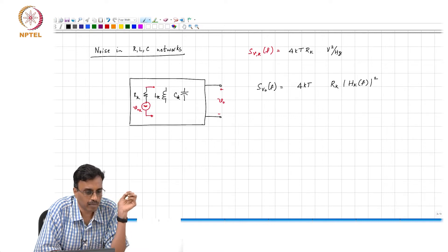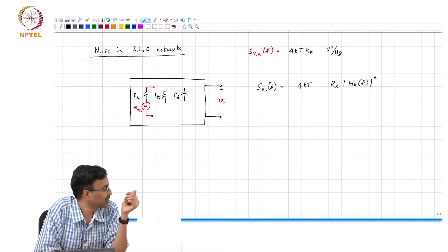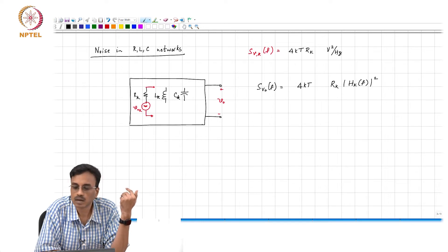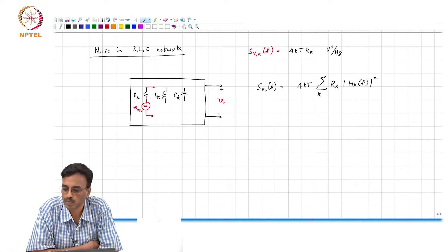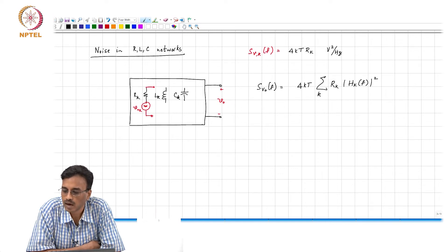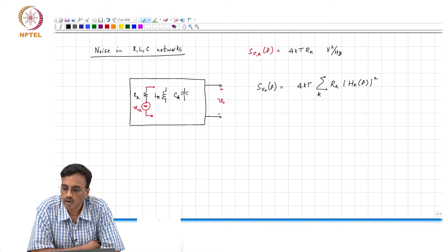We also discussed that the noise from different resistors is independent. So if you want to find the total noise spectral density due to all the resistors, it is simply the sum over all k of R_k·|h_k(f)|².